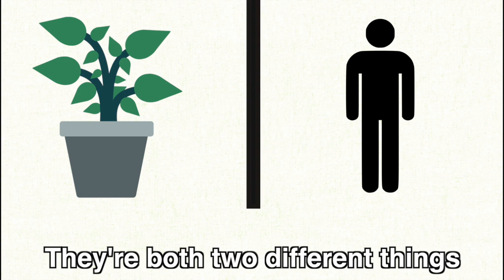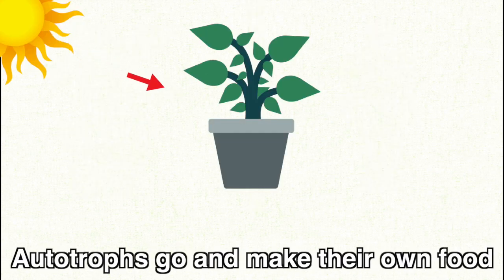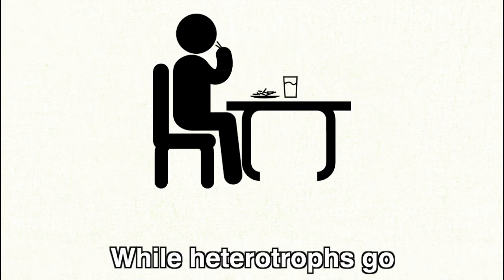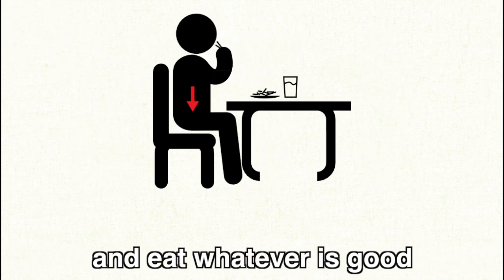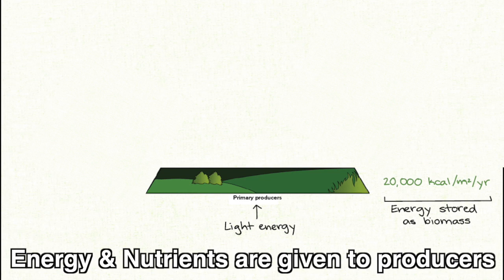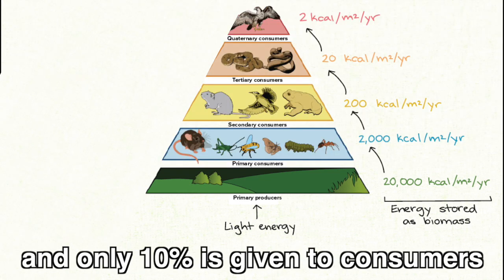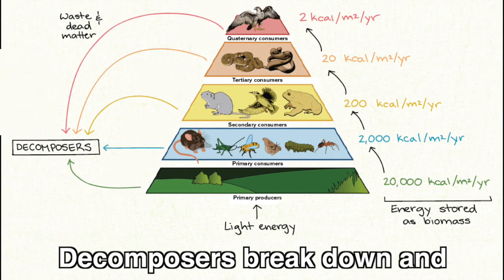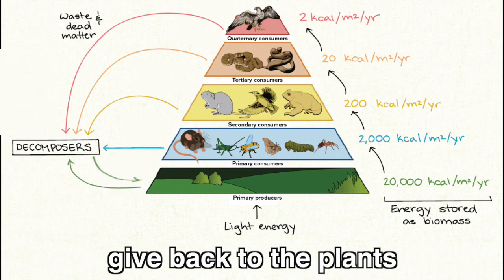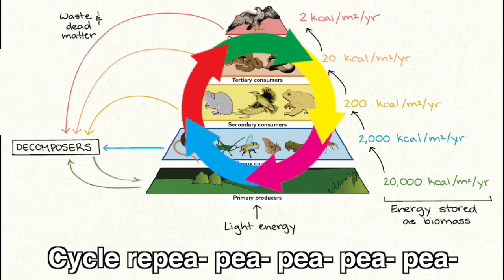Heterotrophs, heterotrophs — they're two different things. Autotrophs go and make their own food, while heterotrophs go eat what is good. Energy and nutrients are given to producers, and only 10% is given to consumers. If you cycle it down and you're back to your plants, it's like a repeat.